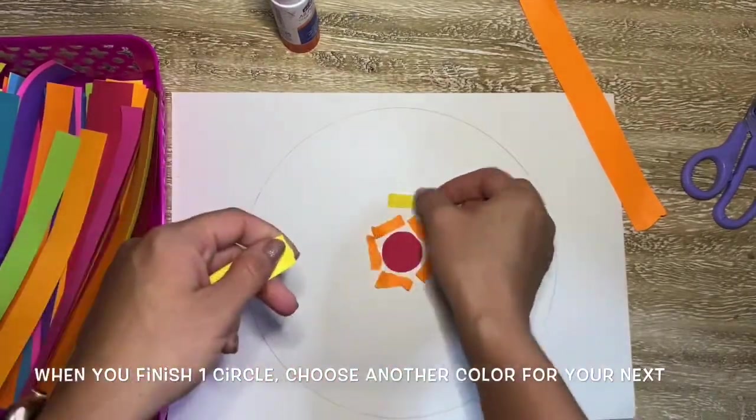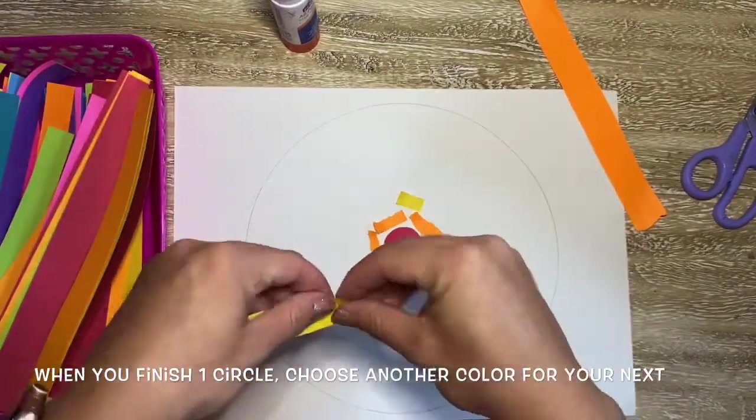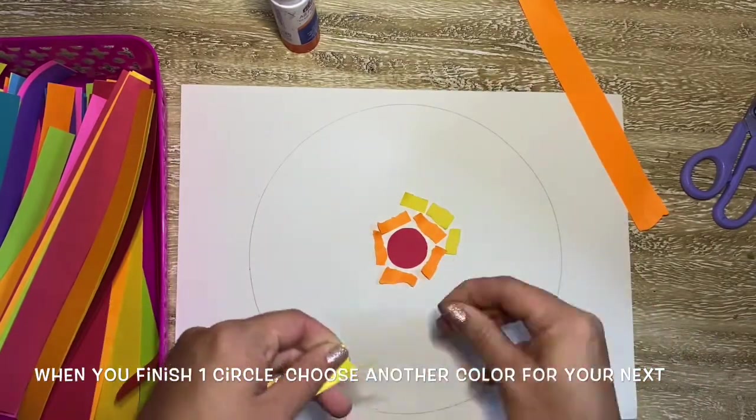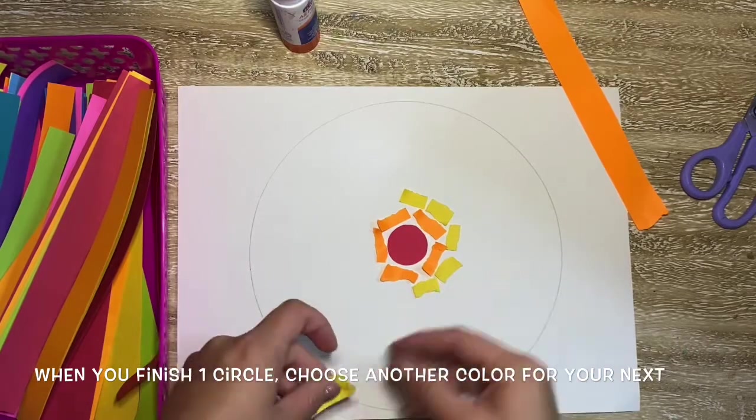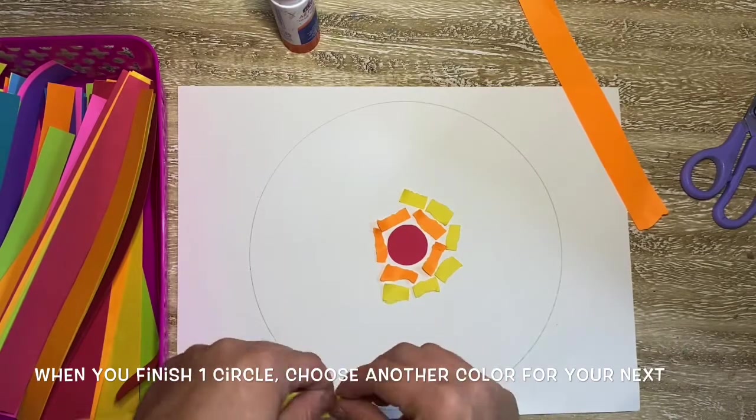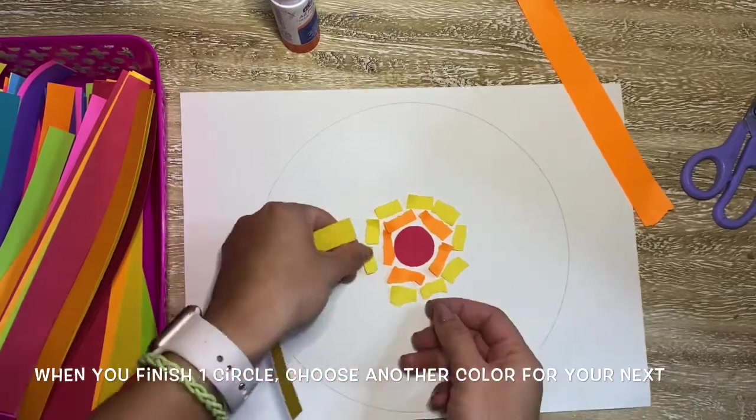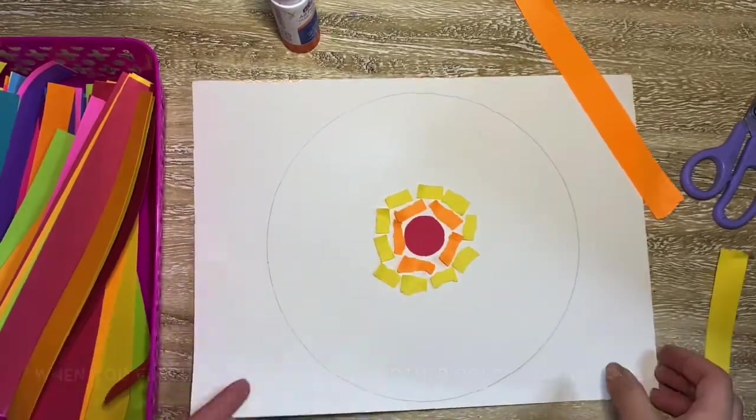Now I'm going to pick another color and do the same thing. Now notice I'm placing my papers down in the shape of a circle even though these papers aren't the shape of a circle, only that middle one was. This is what's called concentric circles. When you draw circles around circles around circles.